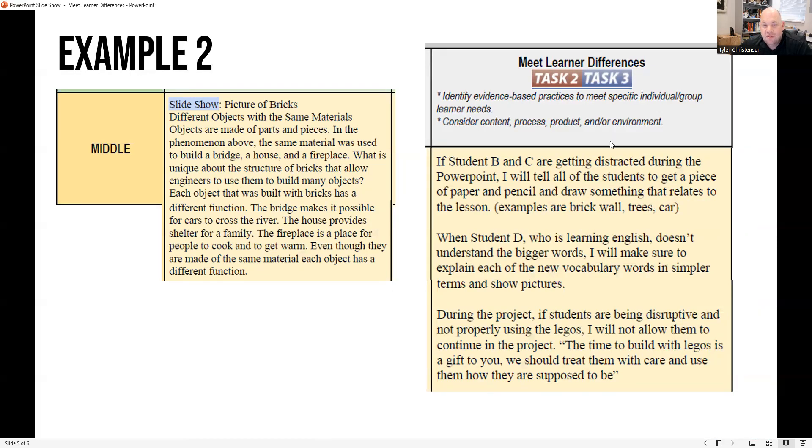Now, of course, this could be something with universal design that we make available to all students. And so if that was the case, we would move that over into the action steps, and we wouldn't need it here in the third column. But if this is a specific accommodation for just these two students, then we leave it here.